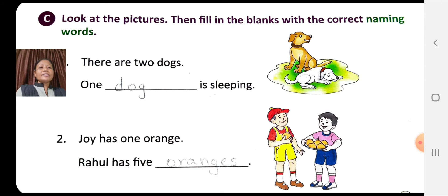Look at the first picture. You can see two dogs — 'dogs' is a plural noun. The other dog is sleeping — 'dog' is a singular noun. In the blank you have to write 'dog': one dog is sleeping. There are two dogs.